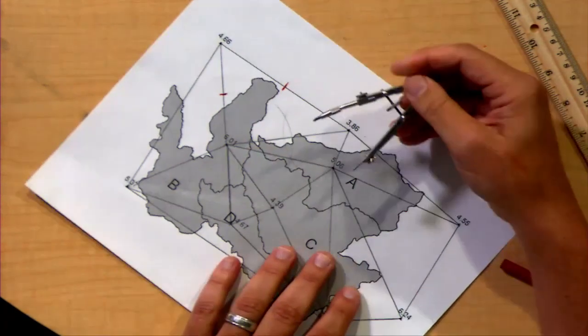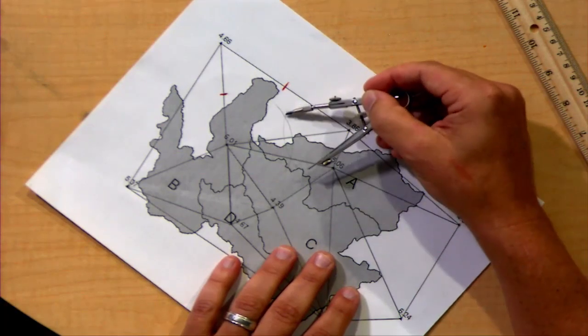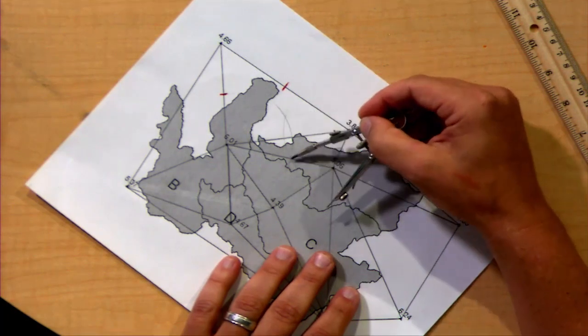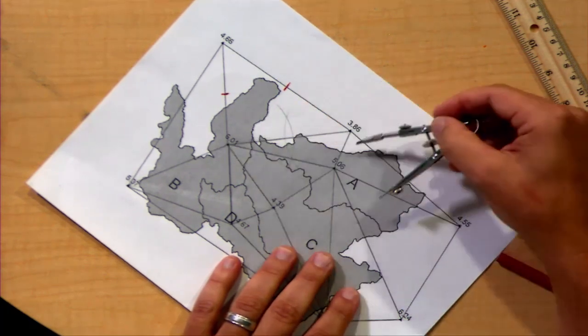Now, for that particular arc, you'll notice there are two intersection points for these two arcs that I created. And we know that both of those intersection points are the same distances away from the ends of the segment.